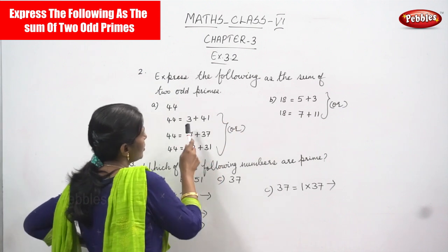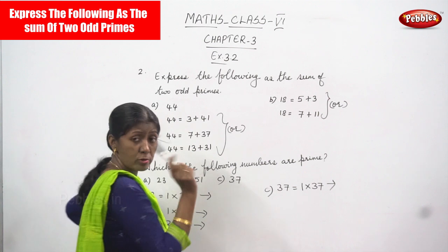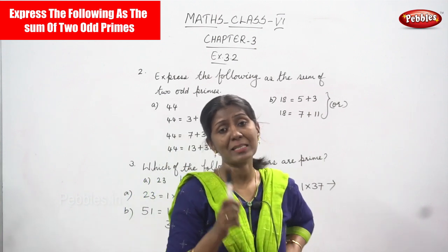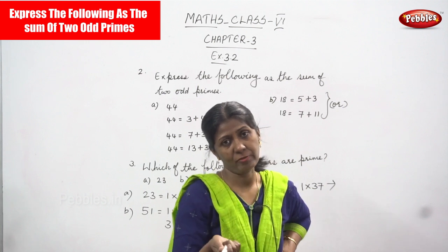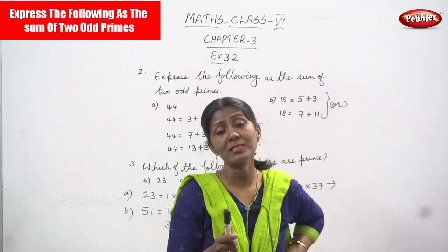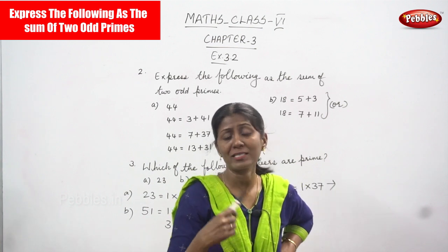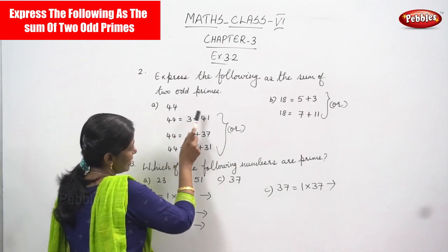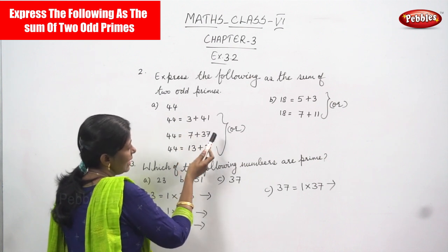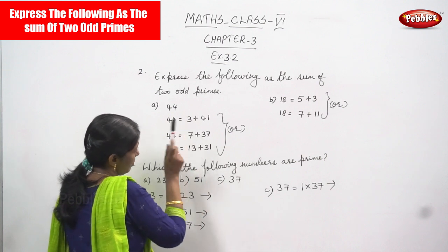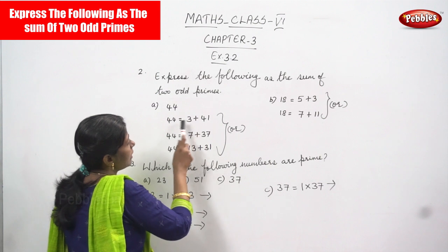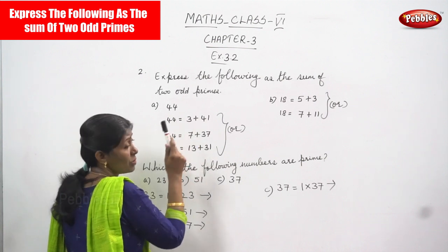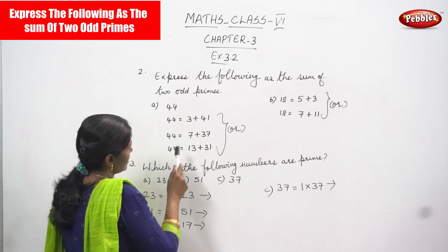So 3 is an odd number and 41 is also an odd number, and both are prime numbers. A prime number has only two factors — one and itself. So 3 is divisible by 1 and 3, and 41 is divisible by 1 and 41. So 41 plus 3 gives you 44.